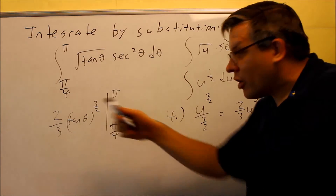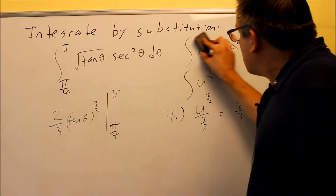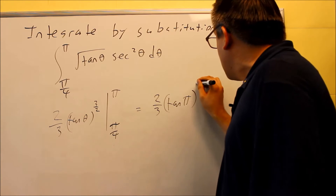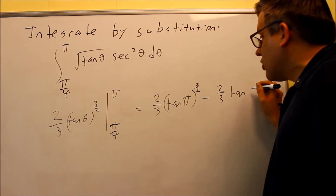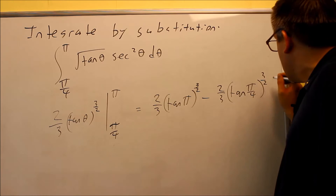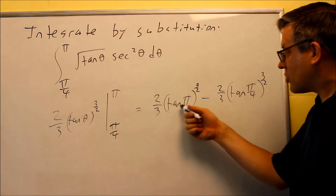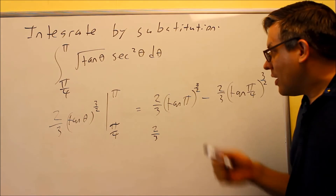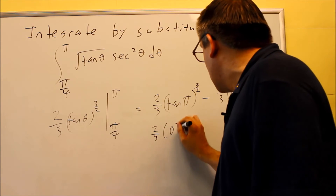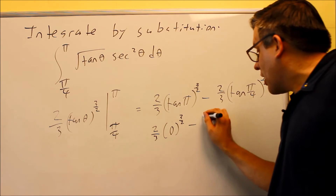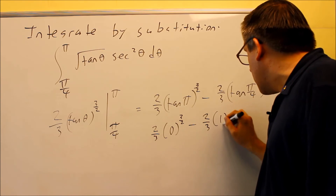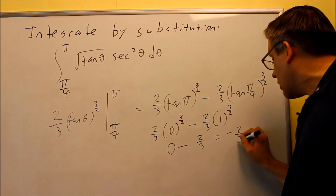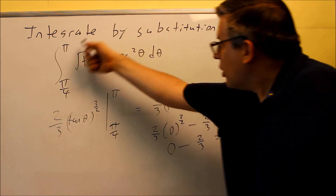The bar indicates we've already integrated and are ready to plug in the numbers. The top number goes in first: 2 thirds tangent of pi to the 3 halves, minus 2 thirds tangent of pi over 4 to the 3 halves. Using the unit circle: tangent of pi equals sine of pi over cosine of pi, and sine of pi is 0, so that whole term is 0. Tangent of pi over 4 is 1, so we get 0 minus 2 thirds times 1, which gives negative 2 thirds as the numerical value for this integral.